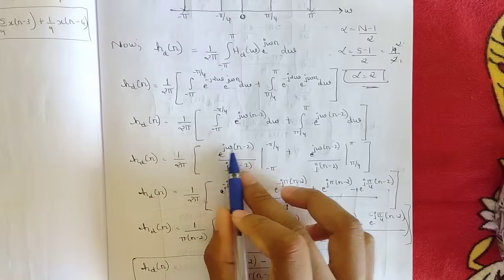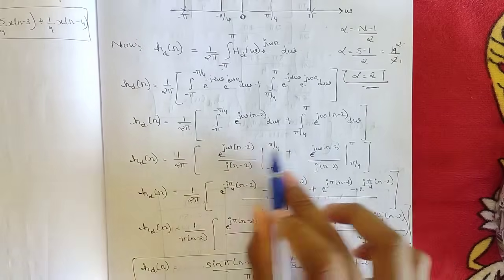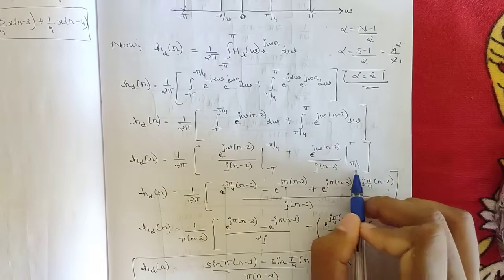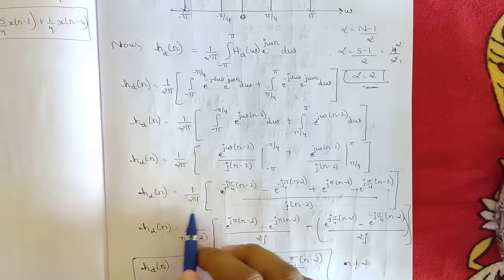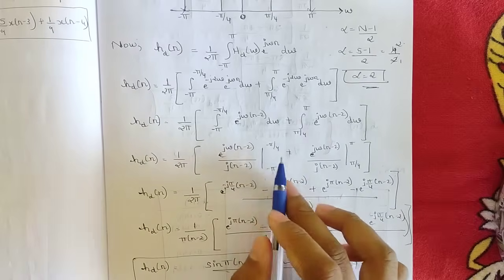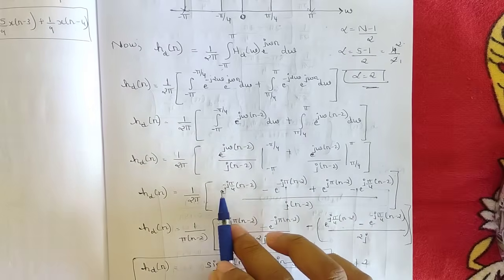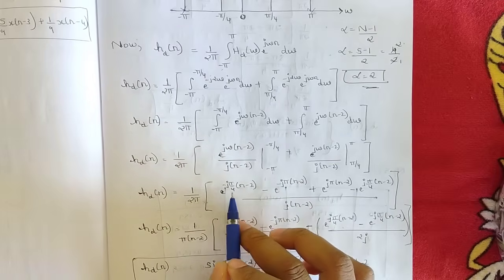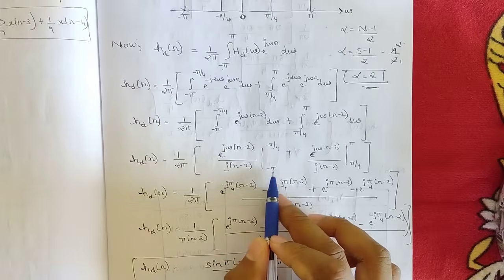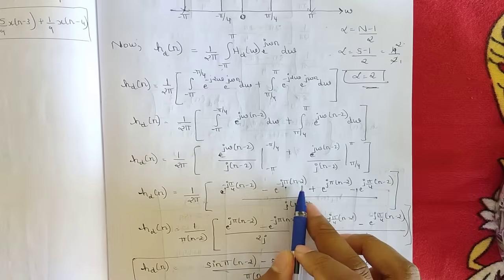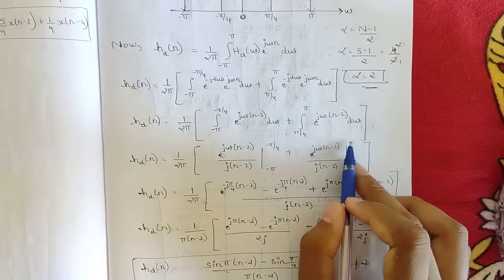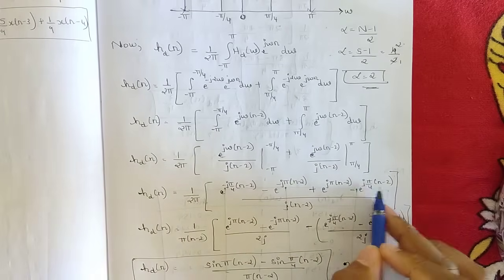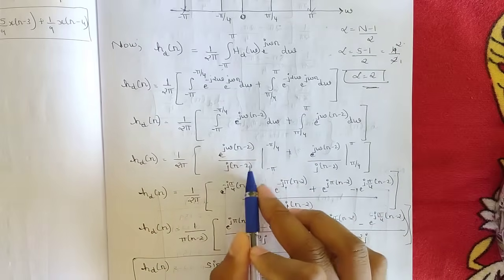The integral of e^(j(n-2)ω) with respect to omega is e^(j(n-2)ω) divided by j(n-2). Apply this to both intervals. Substituting limits: the first interval runs from minus pi to minus pi/4 giving terms e^(-j(π/4)(n-2)) minus e^(-jπ(n-2)), and the second from pi/4 to pi giving e^(jπ(n-2)) minus e^(j(π/4)(n-2)), all divided by j(n-2).